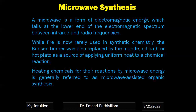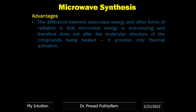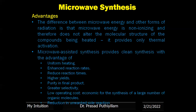The same microwave concept we use in our home kitchen — the microwave oven — where uniform heating is done on food items to heat them up. The key difference between microwave energy and other forms of radiation is that microwave energy is non-ionizing, and therefore does not alter the molecular structure of the compound being heated. It only provides thermal activation with no other unwanted chemical reactions.